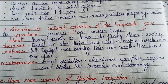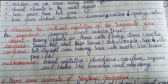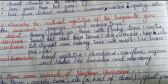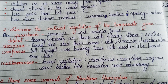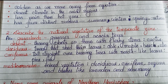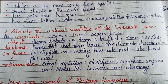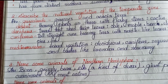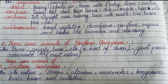Desert areas have thorny plants or those with fleshy stems like cactus. Deciduous trees that shed their leaves include oak, maple, beech, and elm. Conifers are tall, straight, cone-bearing trees with needle-like leaves, such as pine and fir. Mediterranean mixed vegetation includes deciduous trees, conifers, sequoia, and bushes like lavender and rosemary.